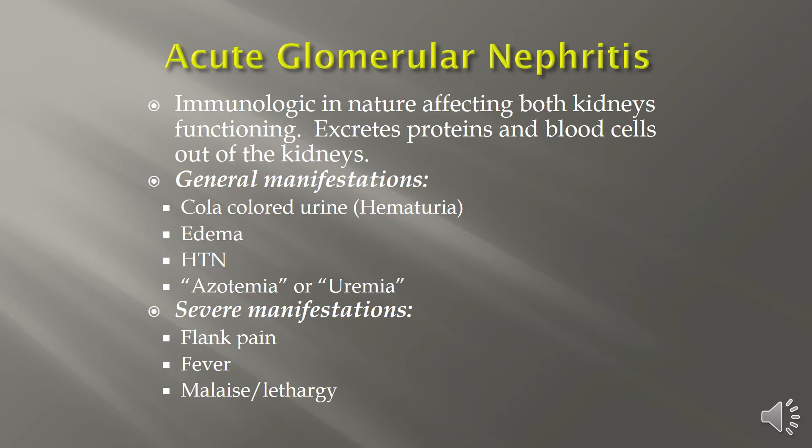Both azotemia and uremia occur when the GFR is significantly low, and BUN and creatinine are critically high because these wastes build up in the bloodstream as they transfer to the vascular system. Severe manifestations include flank pain, also known as CVA or costovertebral angle pain. Patients may also have fever and present with lethargy.